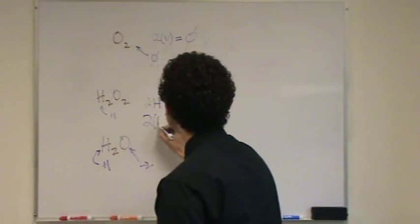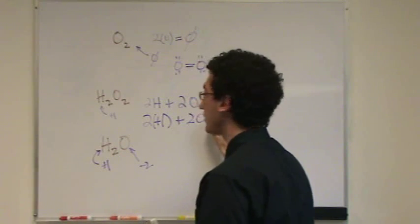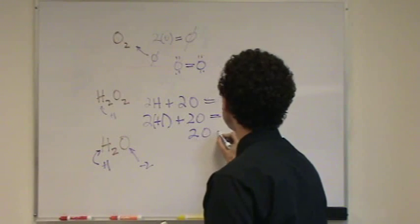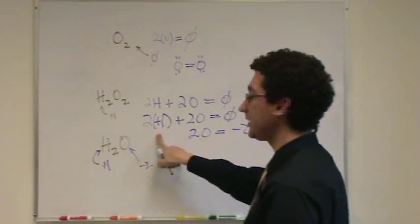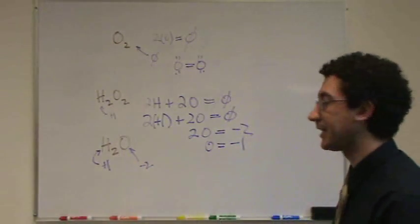So 2 times plus 1 plus 2, and we'll leave this unknown for a second, 2 times oxygen equals 0. Or 2 times oxygen equals minus 2 from this. Oxygen equals minus 1 for a peroxide.